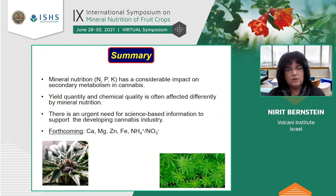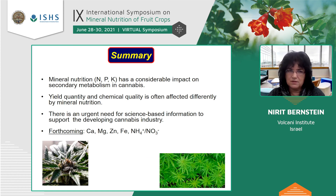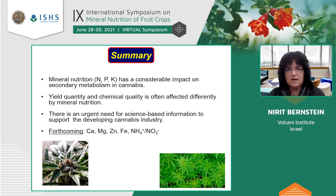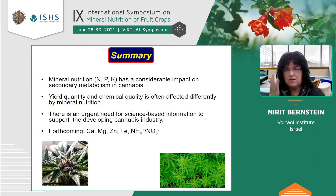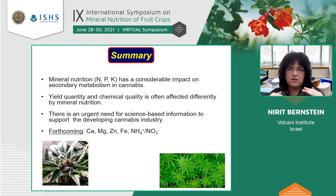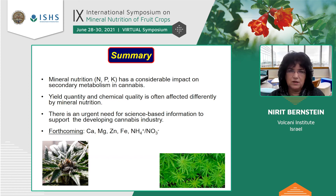In summary, I presented data for nitrogen, phosphorus, and potassium. Mineral nutrition has a very high impact on secondary metabolism in cannabis. Yield quantity and yield quality are often affected differently by mineral nutrition across all three elements, so it has to be a compromise. There is definitely an urgent need for science-based information to support this developing cannabis industry. What we've seen so far is just vegetative versus reproductive stage production throughout the season. Obviously we are working on different applications — for example, at the beginning of the vegetative or flowering season, or toward maturation — but I will not have time to discuss those today.